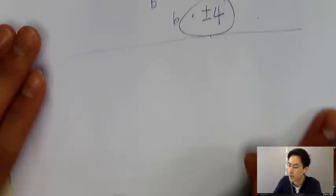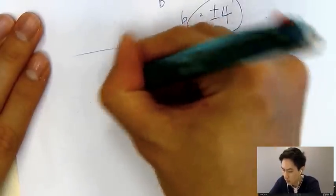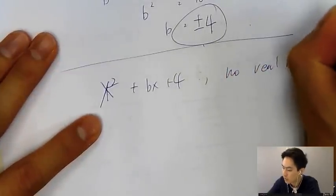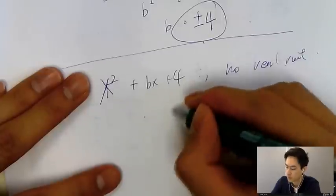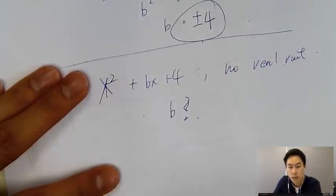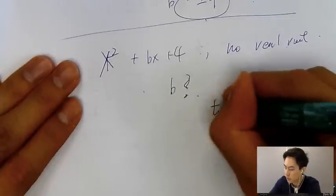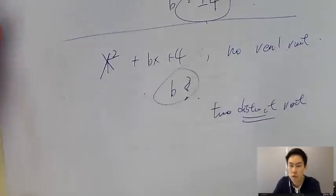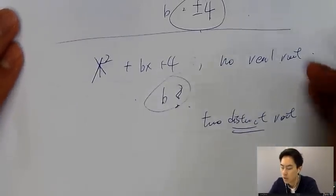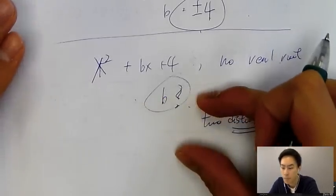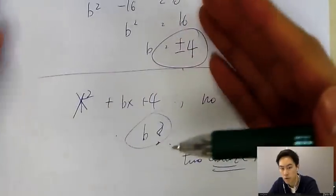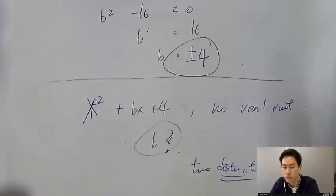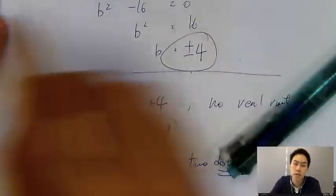The next question types might ask: for x squared plus bx plus 4 with no real roots, find the possible values of b. Or they may ask for two distinct roots and solve for b as well. If you want help with all these question types, click the link below to register for a trial lesson. In one lesson, I'll cover all question types for the discriminant so you can ace the topic. See you next time!